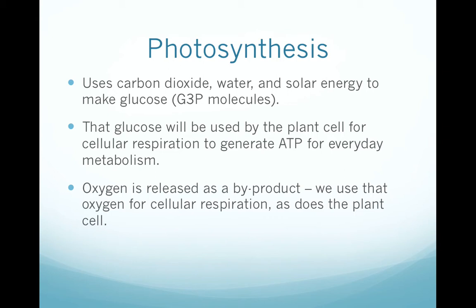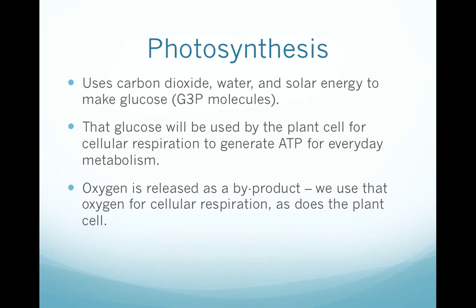In summary, photosynthesis uses carbon dioxide, water, and solar energy to make glucose — specifically a G3P molecule. That glucose is used by the plant cell for cellular respiration to generate ATP for everyday metabolism, and oxygen is released as a byproduct. We use that oxygen for cellular respiration, as does the plant cell itself.